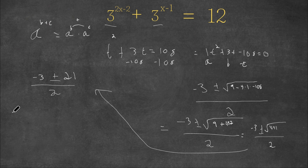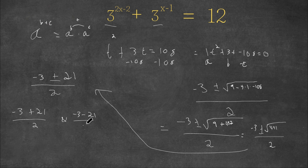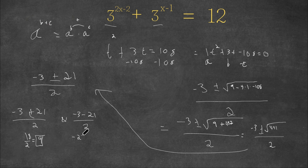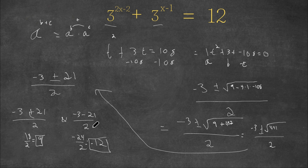This gives us two equations: negative 3 plus 21 over 2, and negative 3 minus 21 over 2. Solving the first: negative 3 plus 21 is 18, divided by 2 equals 9. Solving the second: negative 3 minus 21 is negative 24, divided by 2 equals negative 12.